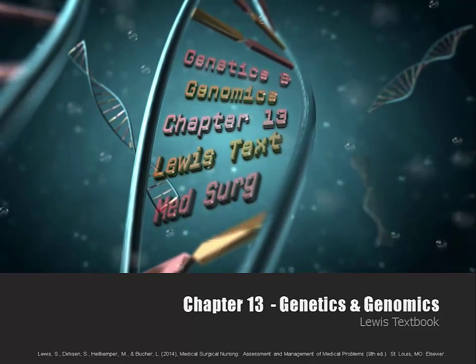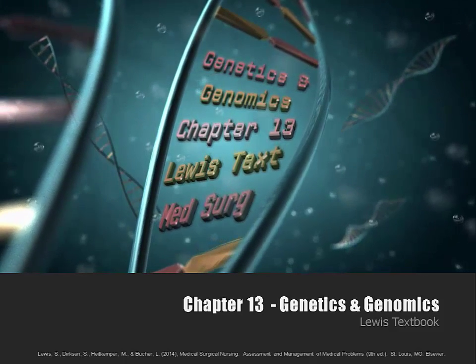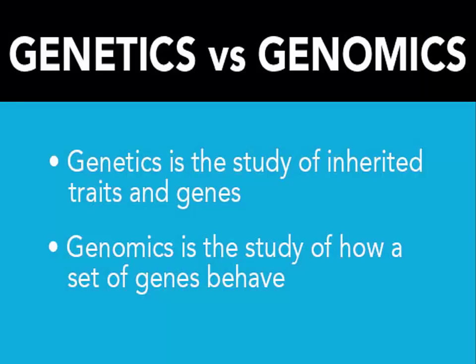This is a review from class, Chapter 13, Genetics and Genomics from the Lewis textbook. According to the World Health Organization, genetics is the study of heredity. Genomics is the study of genes and their function. The main difference is that genetics examines the functioning and composition of a single gene, whereas genomics addresses all genes and how they're related in order to identify their combined influence on growth and development of an organism.